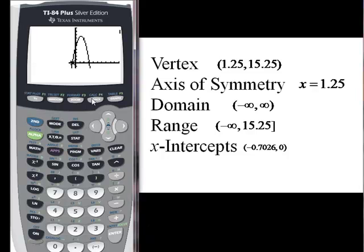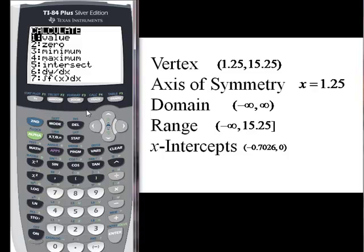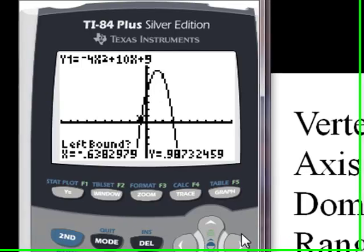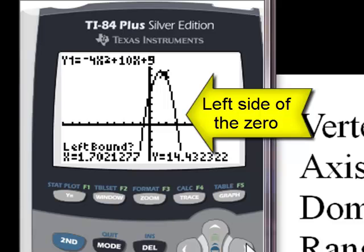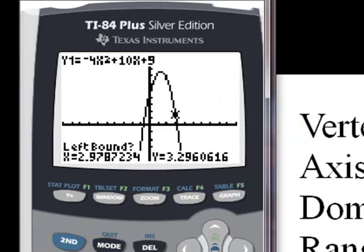We're going to do something identical to that to find the other one. The zero is number two. And we're going to have to give it a left bound and right bound again. So we go over to the left side of it. Anywhere over here is fine, as long as we're to the left of the zero. And now we've got to go to the right of it. And we've got to make sure we cross the x axis if we're looking for a zero.